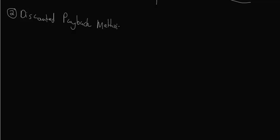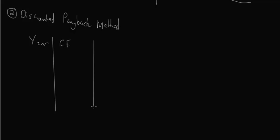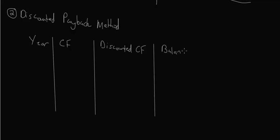The discounted payback method is very similar to the regular payback method except we add an extra column for discounted cash flow. We'll have columns for Year, Cash Flow, Discounted Cash Flow, and Balance. Using the same setup with years 0 through 3, the cash flows are minus $15,000, then $10,000, $5,000, and $3,000. For this method, you need to know the cost of capital — let's say the WACC is 10%.